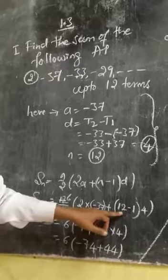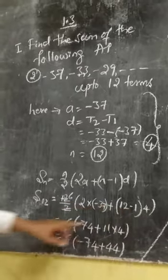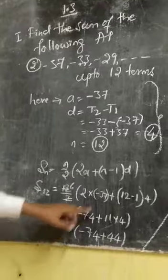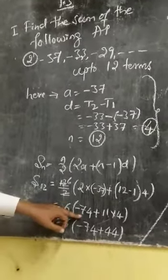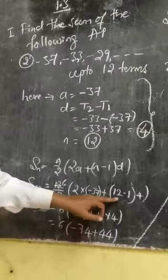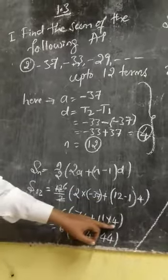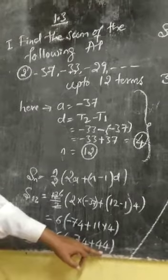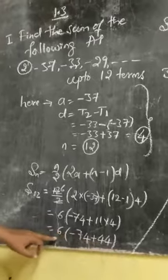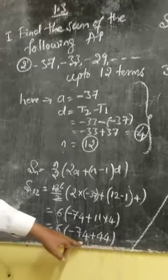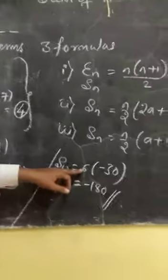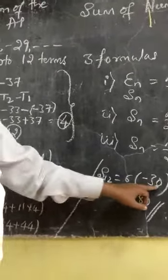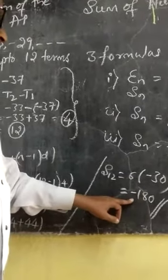12. 12 minus 1 into 4. So, 6, 2 into 2, 6 is up. Therefore, 6 into bracket minus 74 becomes this one. Plus 11, that is 12 minus 1 becomes 11. 11 into 4, 44. So, minus 74 plus 44. The difference is 30. So, 6 into 30. That is minus 30. So, S12 is equal to 6 into minus 30. 6 into 3 is 18, 6 into 30 is 180. So, minus 180. So, minus 180 is the answer.